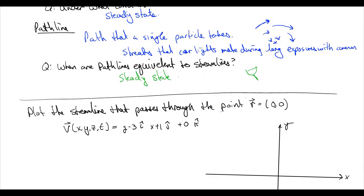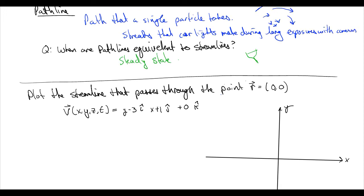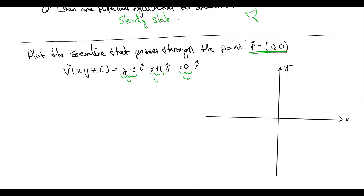Let's use what we've learned with an example. We're given an Eulerian description of velocity: u is a function of y, v is a function of x, and w equals zero. We want to plot a streamline that passes through the point r₀ at the origin. Looking at this velocity field alone, you have no idea what the flow looks like — but when we calculate the streamline, it turns out to be very recognizable.